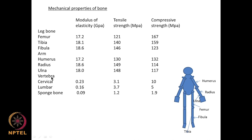If you look at the vertebra: the cervical modulus of elasticity is quite small at 0.23, the lumbar is 0.16, and the spongy bone that connects with the socket has a very very low modulus of 0.09. The compressive strength is also much lower compared to the rest of the bones. That is why the cervical vertebra is a very important region where one does not want to apply too much tension or compression.